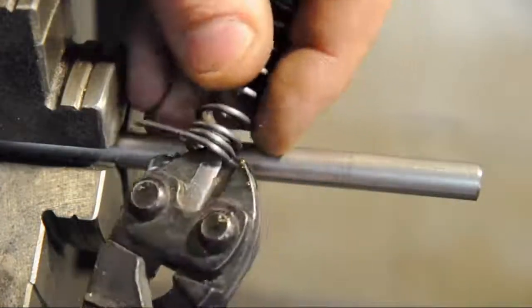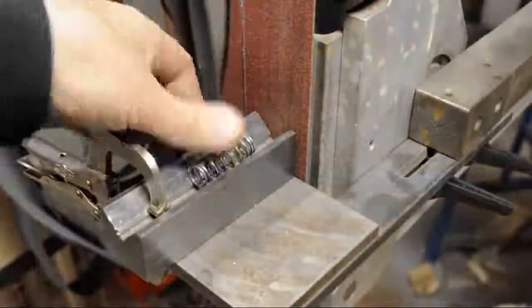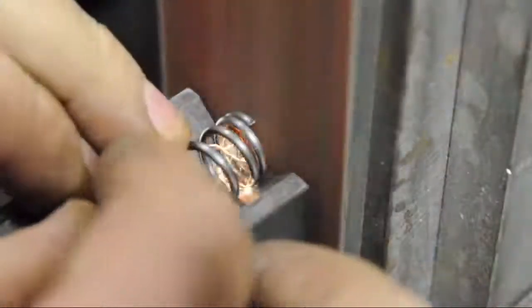Trim the ends. A v-block and belt grinder make quick work of squaring the spring.